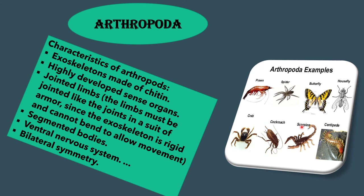Arthropods make up about 80% of the animal kingdom. They can be terrestrial or aquatic. Their bodies have a hard outer covering or exoskeleton made of a proteinaceous substance called chitin. The body is divided into a head, thorax and abdomen, and bears jointed legs in pairs of three to many for locomotion. Arthropods also have antennae and compound eyes on their heads. Insects such as honeybees and scorpions are examples of arthropods.